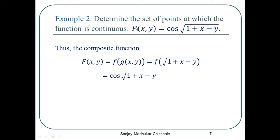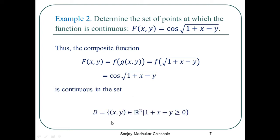This function F(x,y) is the composition of f with g. Therefore, it is also continuous everywhere in R² except for those ordered pairs (x,y) for which 1 + x - y < 0. Therefore, it is continuous in its domain D = { (x,y) ∈ R² : x + 1 - y ≥ 0 }.